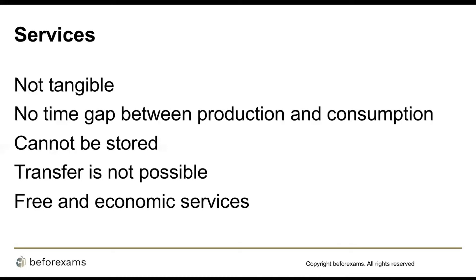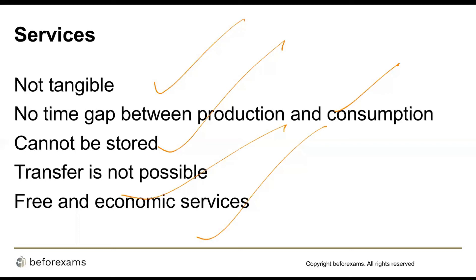Now we will talk about the kinds of services in economics and their characteristics. The most major characteristics of services are: they are not tangible, there is no time gap between production and consumption, they cannot be stored, and transfer is not possible. Free and economic services are the two prominent types. Goods satisfy our present and future wants, and material goods and services can be further categorized into types.